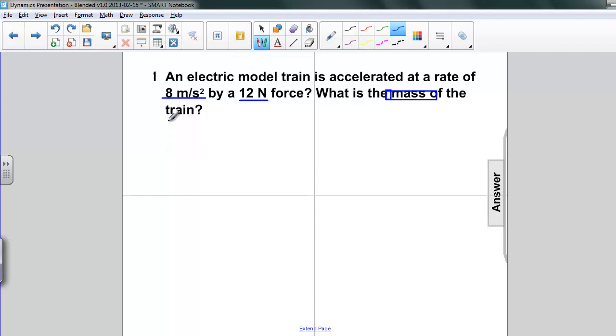We write down what we know. Acceleration equals 8 meters per second squared. And the net force is equal to 12 newtons. We're asked to find the mass.